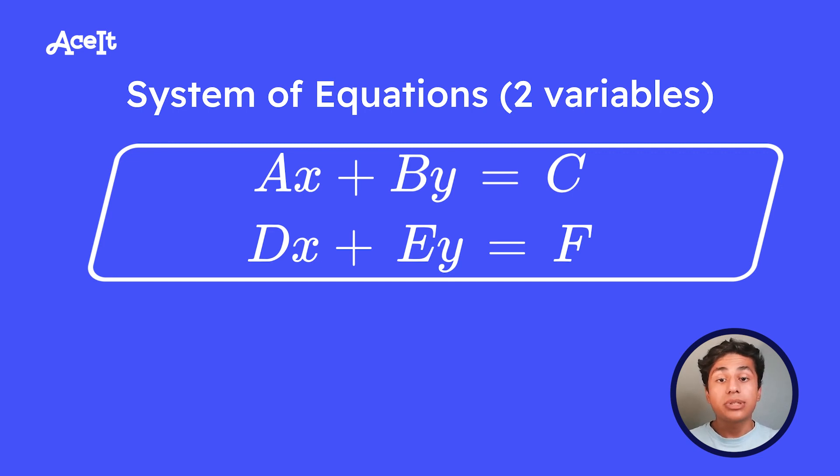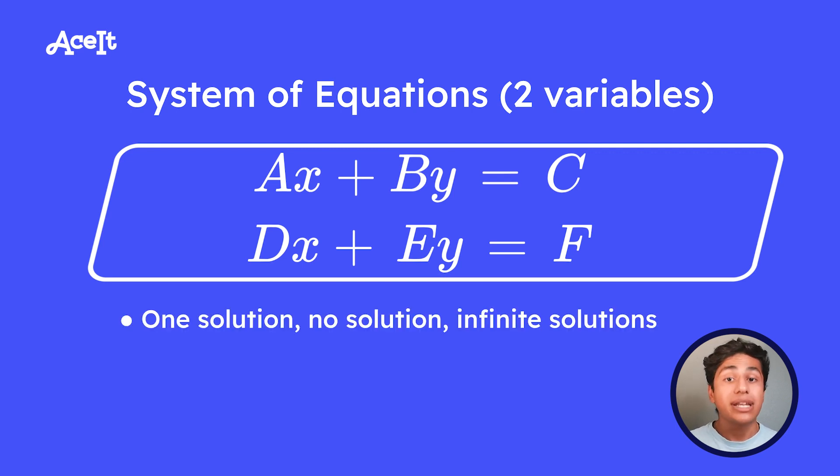So a system of two equations can either have one solution, no solution, or infinitely many solutions. And the three main ways to solve a system are graphing, substitution, and elimination.